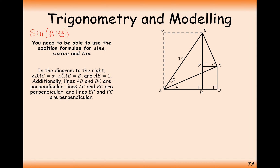We're going to come up with these formulas using this diagram here, and as you can see it's carefully constructed with a whole bunch of right-angled triangles, nicely so that the length from A to E is 1, so we're not going to have any scale factor multipliers at most points.